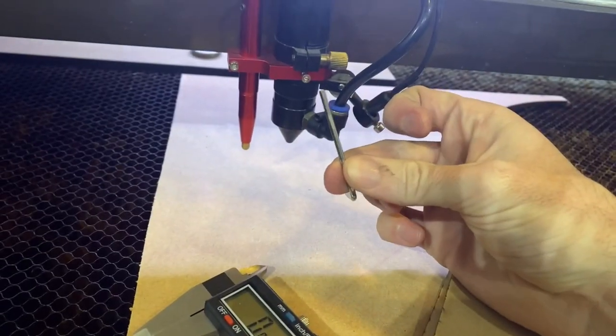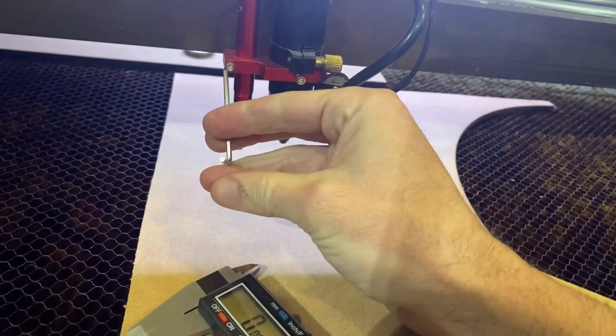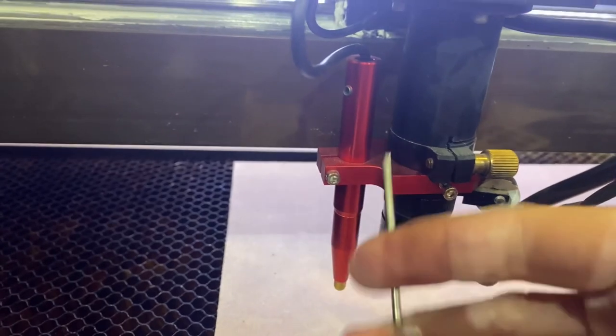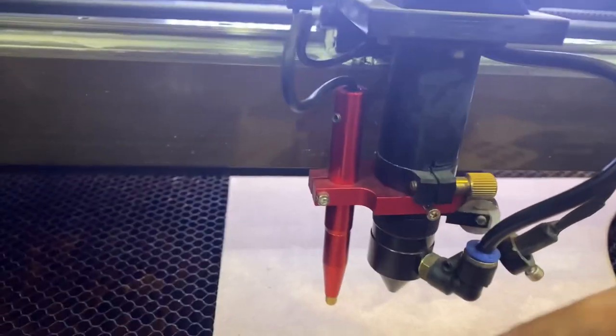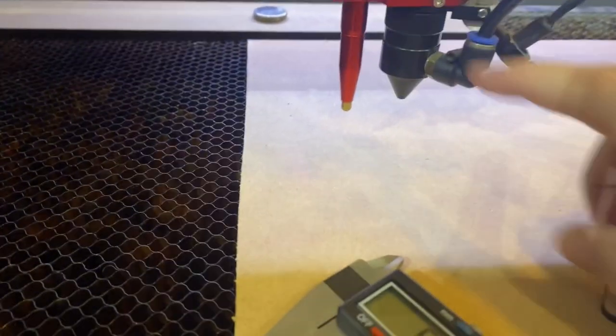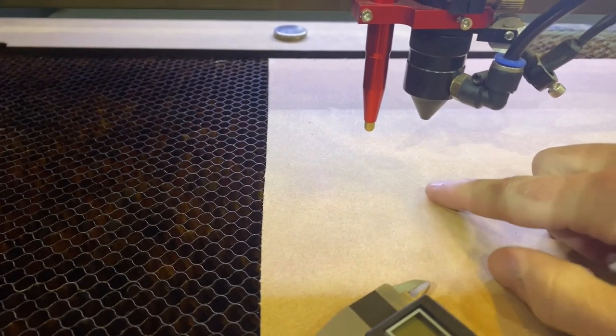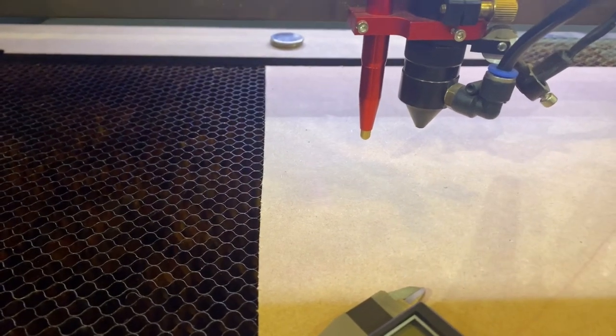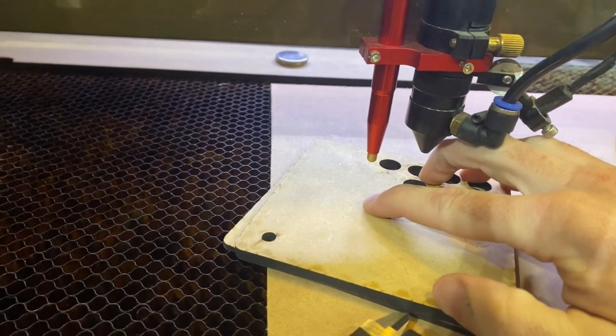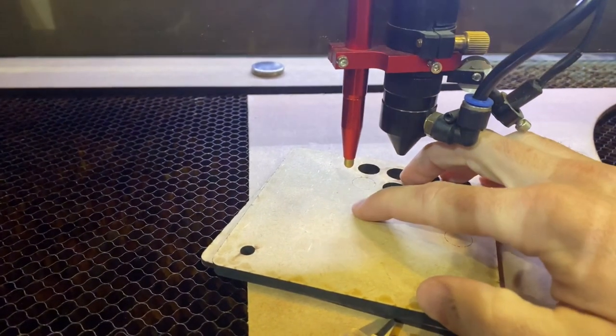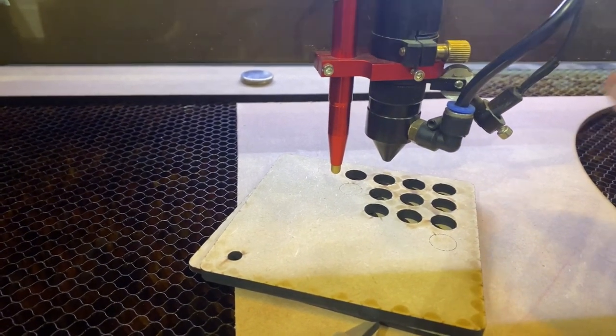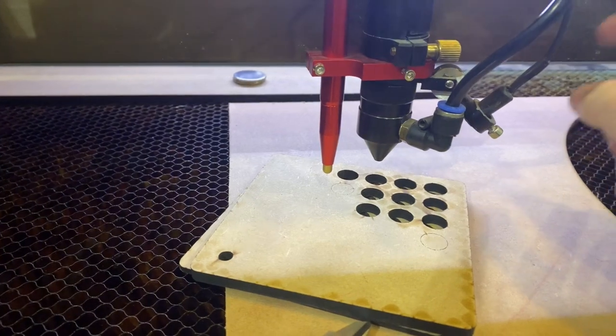And you also need the hex key or the Allen key so that you can loosen this up right here and adjust this pin up and down to create our offset. So the process is I'm going to get the laser head in focus to this waste material right here, and then come in and set the pin down to here, creating a 9mm offset. Then I'll go into Lightburn and adjust the machine settings for the Z offset.